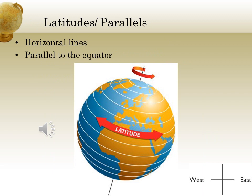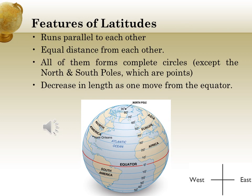Let us learn more about latitudes. The horizontal lines drawn parallel to the equator around the earth are called latitudes or parallels. Latitudes run parallel to each other in the east-west direction. They are at an equal distance from each other. All of them form complete circles except the north pole and the south pole, which are points. The latitudes decrease in length as you move from the equator to the poles.